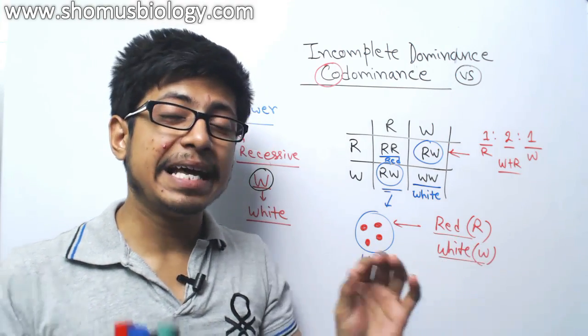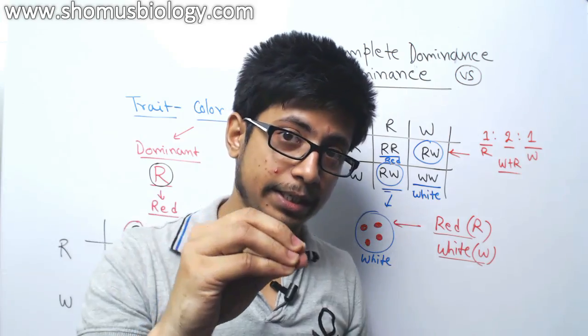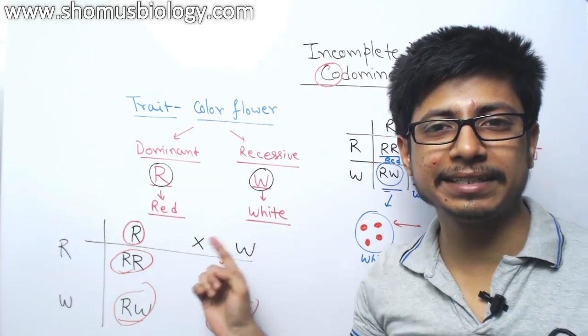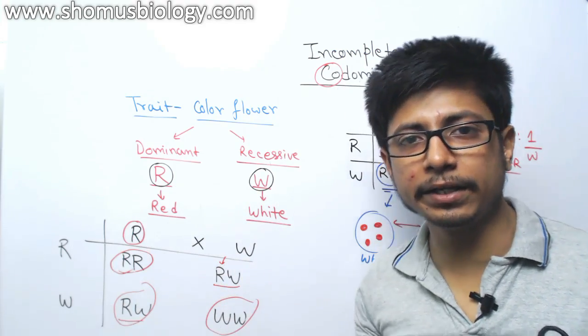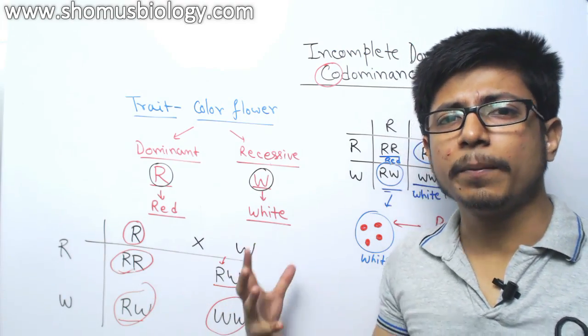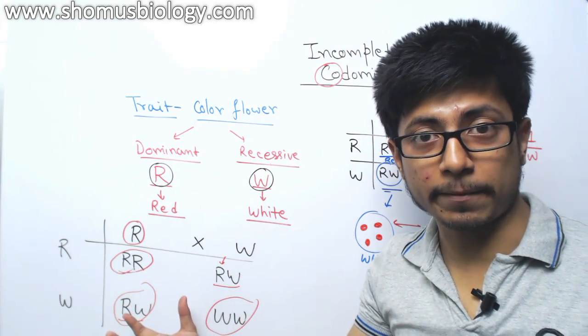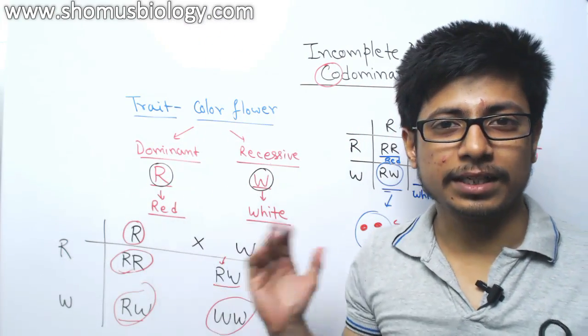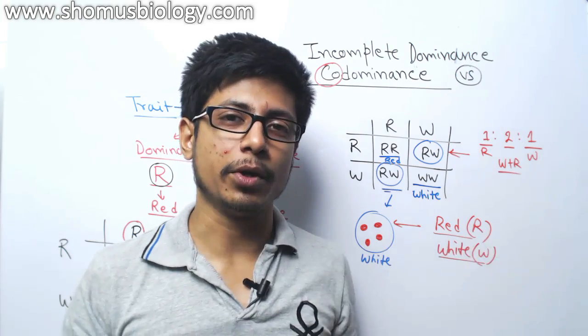So both of them maintains their characteristic in it white and red, but here none of them can maintain their characteristics, completely different kind of fused and kind of a blended character result which is pink. So that is the major difference between the incomplete dominance and codominance.